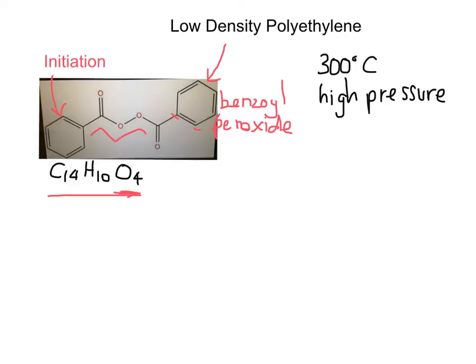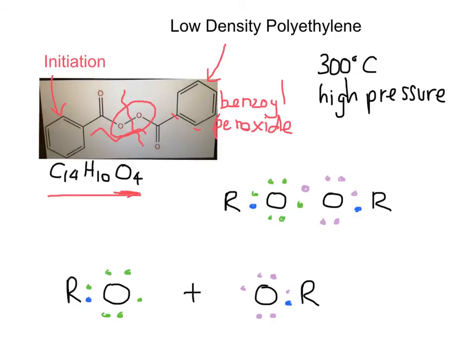So here we have benzoyl peroxide. We need to initiate this catalyst first in order to break apart our ethylenes. So what we do, we heat it up to 300 degrees Celsius under high pressure, and we're focusing on this oxygen bond right here. And we're going to break this oxygen bond apart.